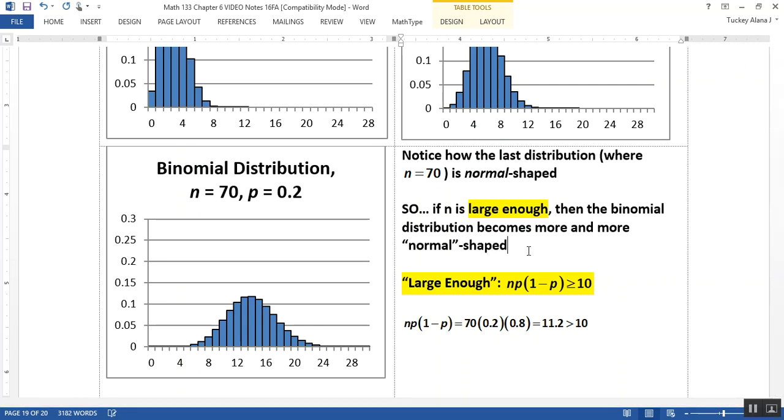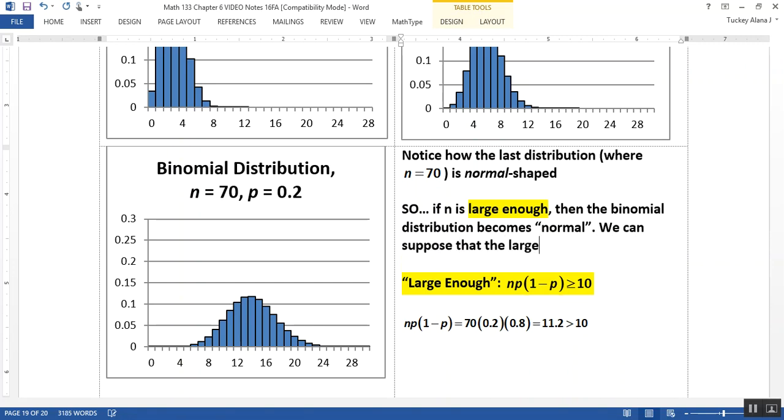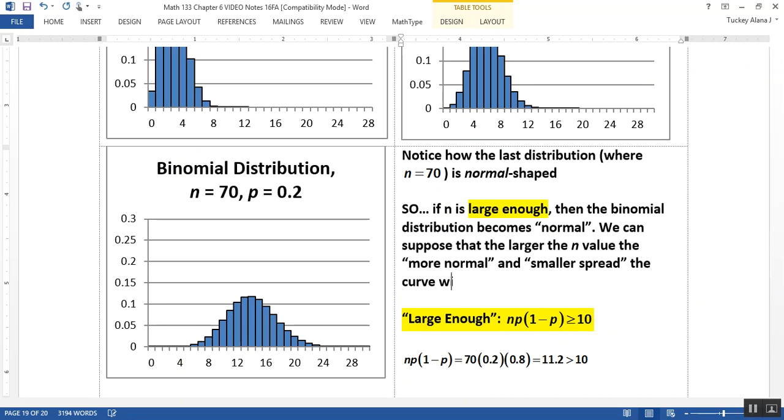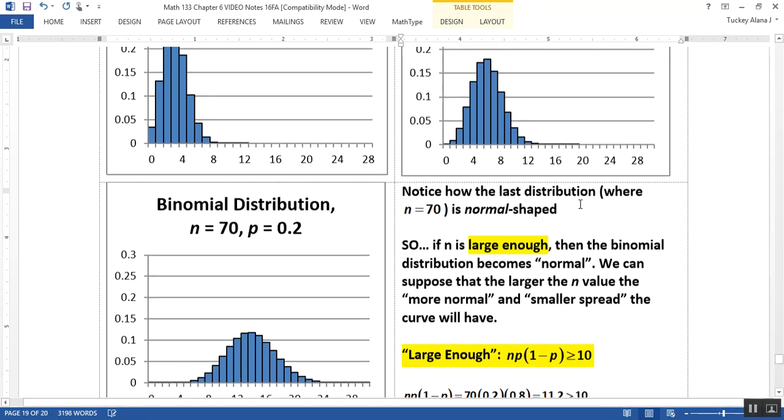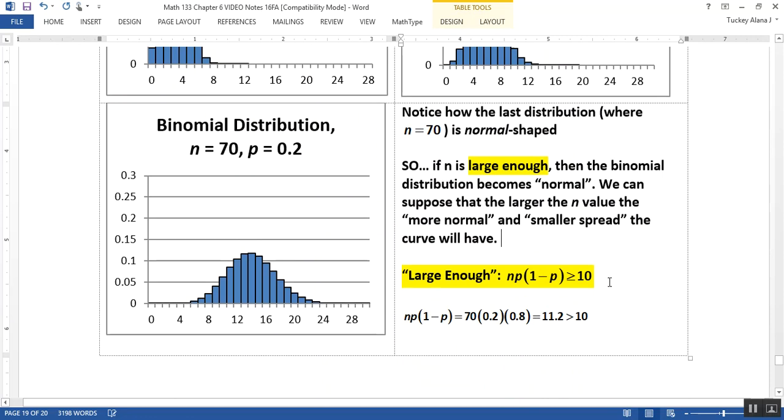We notice how the last distribution where n equals 70 is normal shaped. That leads us to believe that if n is large enough, whatever that means, then the binomial distribution becomes more and more normal shaped. In other words, it becomes normal. The question is, what is large enough? We can suppose that the larger the n value, the more normal and smaller spread the curve will have.